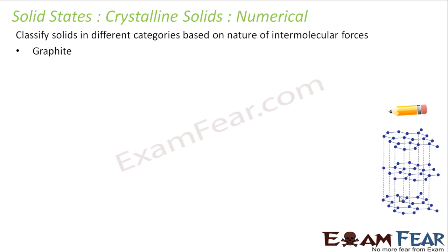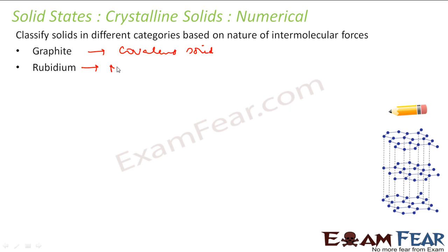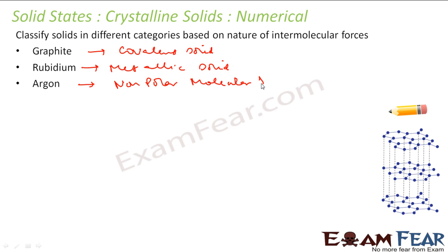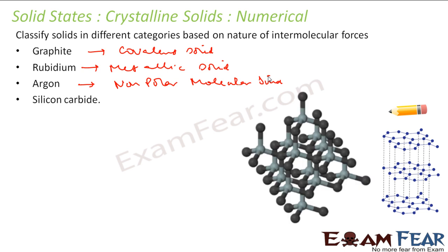Graphite has a covalent network structure, so it is a covalent or network solid. Rubidium is a metal, so it is a metallic solid. Argon is a noble gas — all noble gases are non-polar molecular solids. Silicon carbide has a complex covalent structure, so it is a covalent solid.